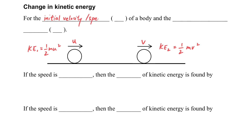For the initial velocity or speed, we use U, and for the final velocity or speed, we use V. Then we can get the following situation.